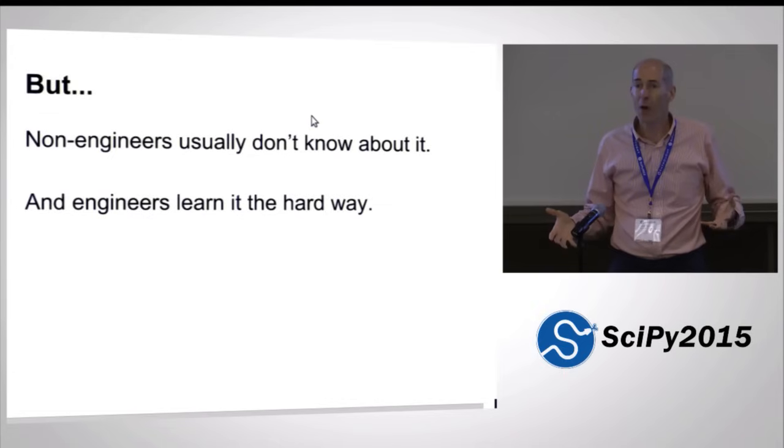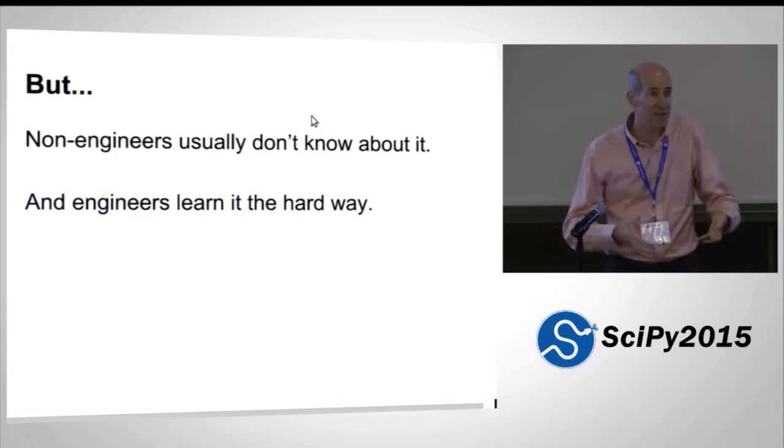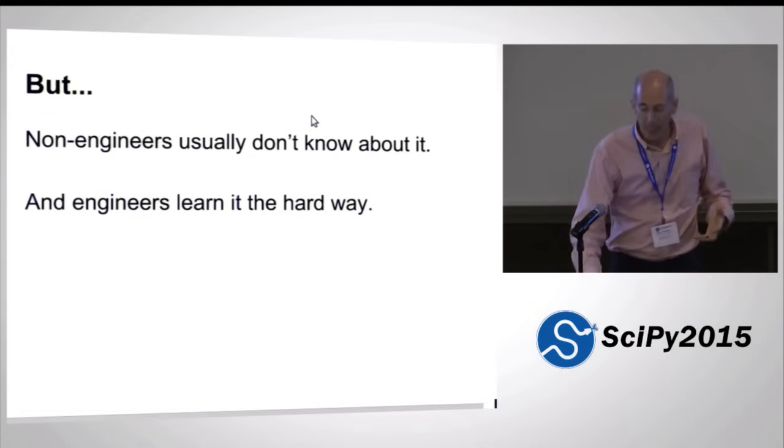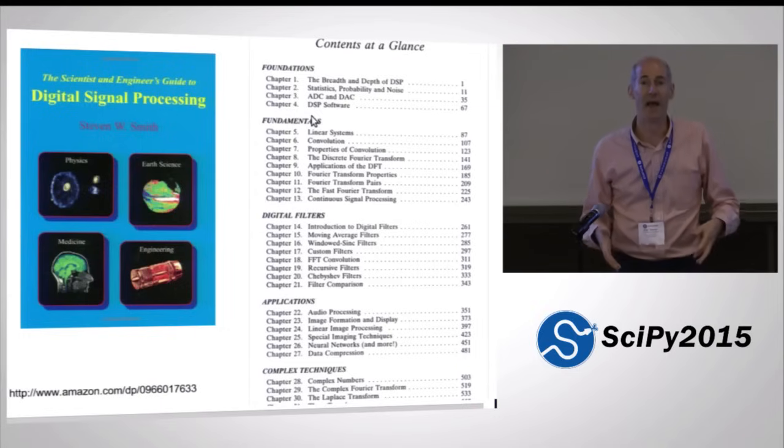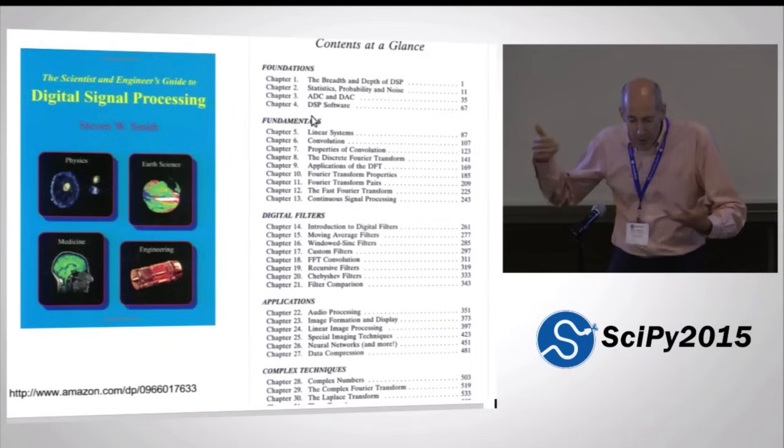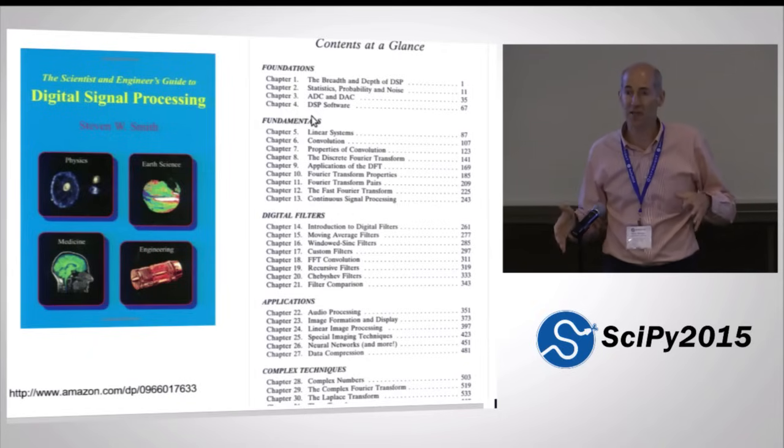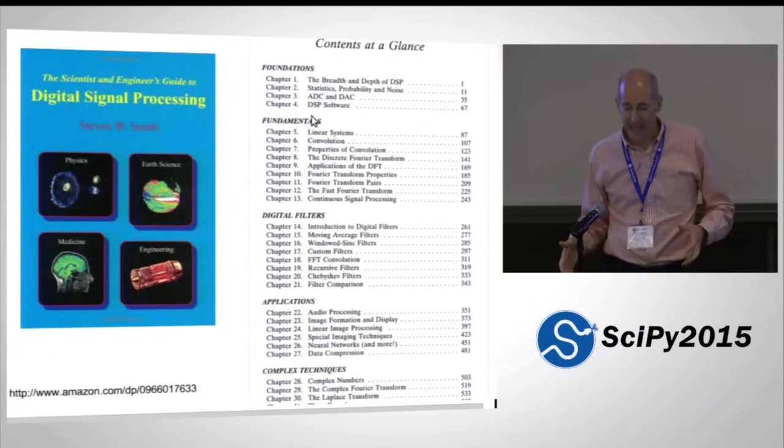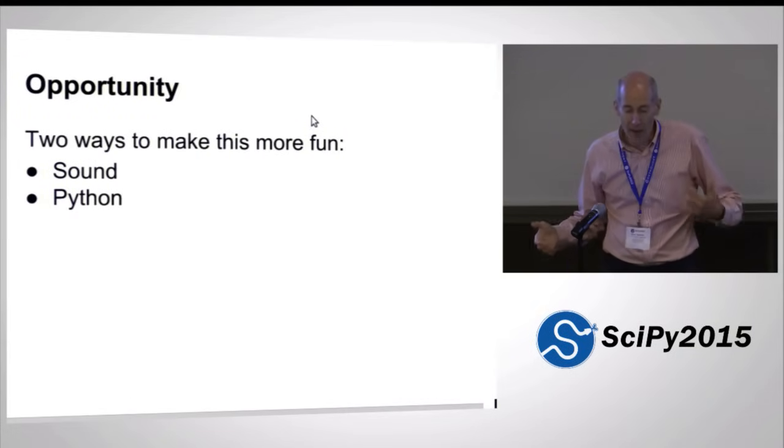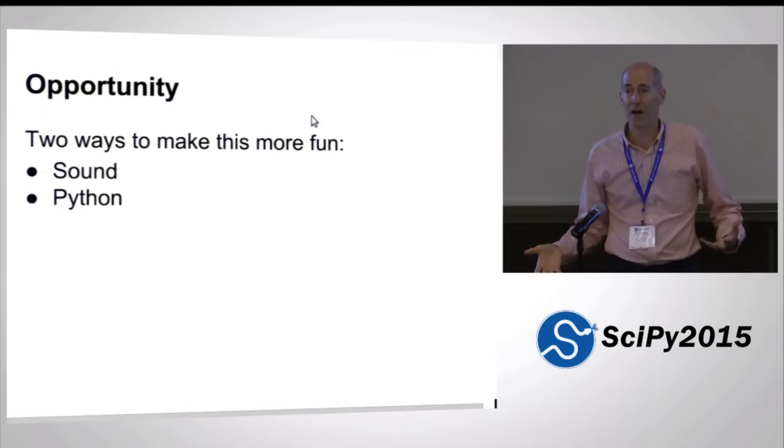But non-engineers typically don't know about it. And for engineers, it's typically in the engineering program, but in a really painful way. This is a good book in DSP, but if you look at this, you're into chapter 9 before you get to the fast Fourier transform. You're a couple of hundred pages in, and you had a really long slog through mathematics to get there. It doesn't have to be that way.